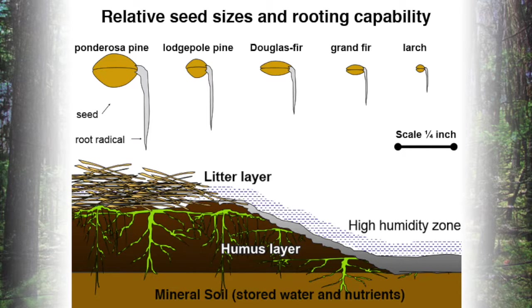Tree seeds have a hard time germinating on an intact forest floor, whereas when there's a disturbance such as fire, landslide, avalanche, or logging that exposes mineral soil, it allows seeds — particularly small ones such as larch — to produce a rootlet that grows into exactly the right medium. Therefore, disturbance is a very important part of recruiting tree seedlings on a site.